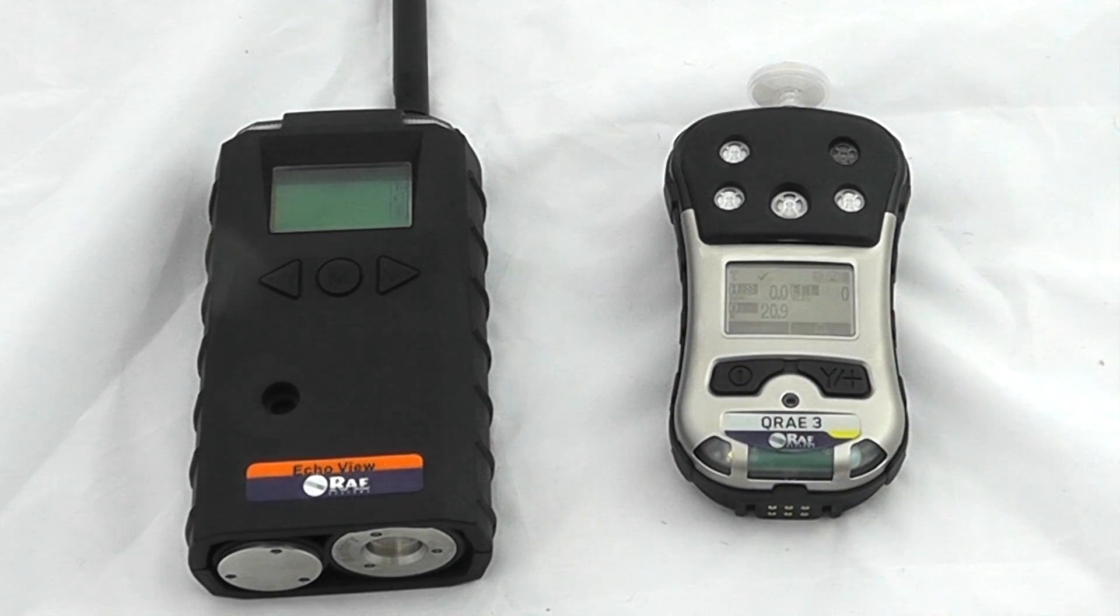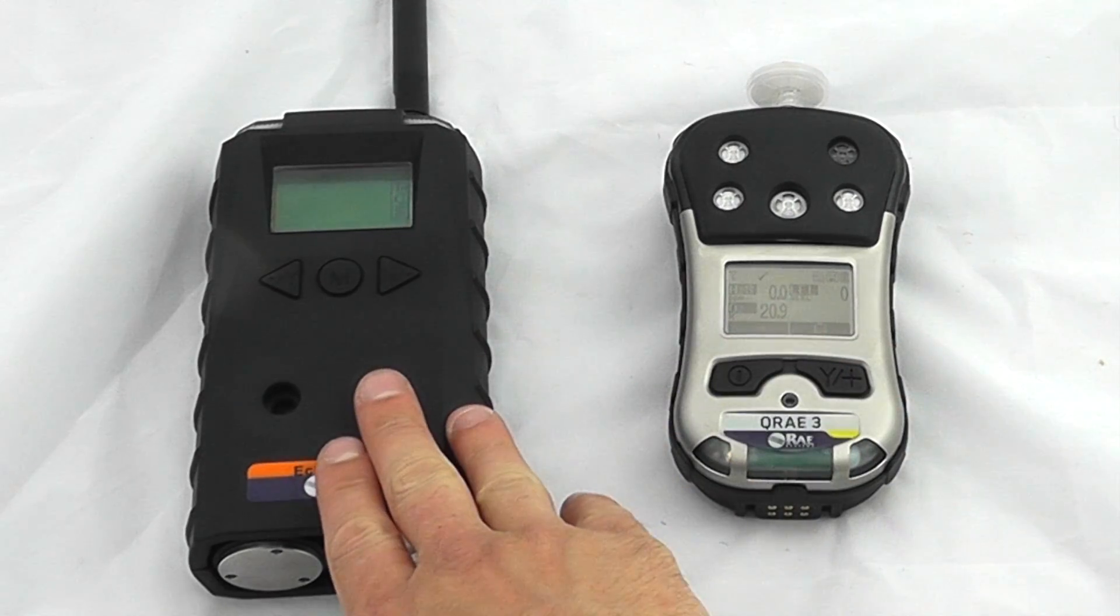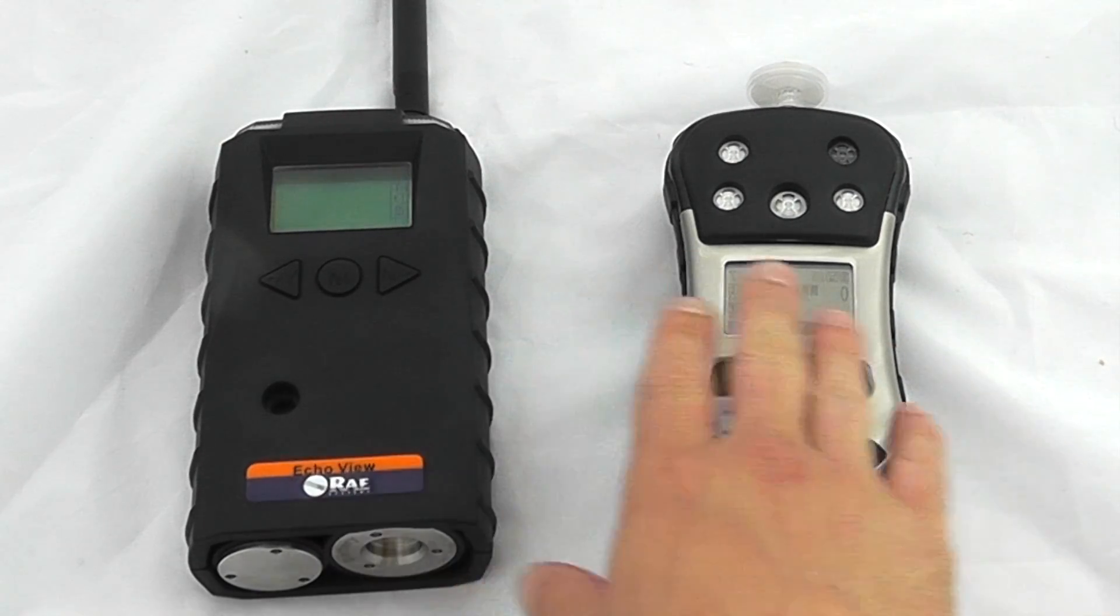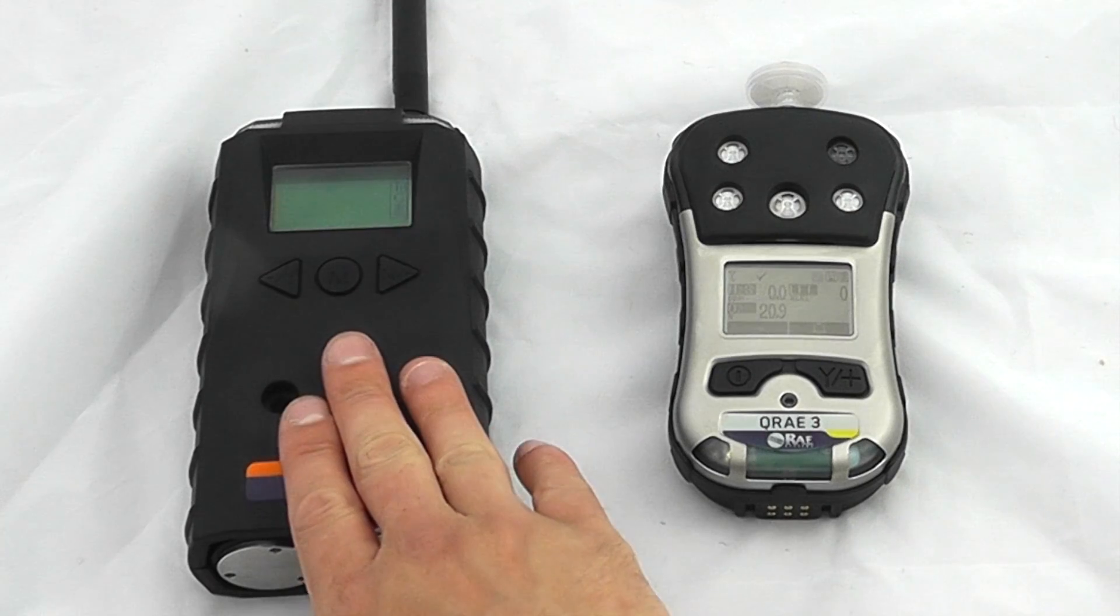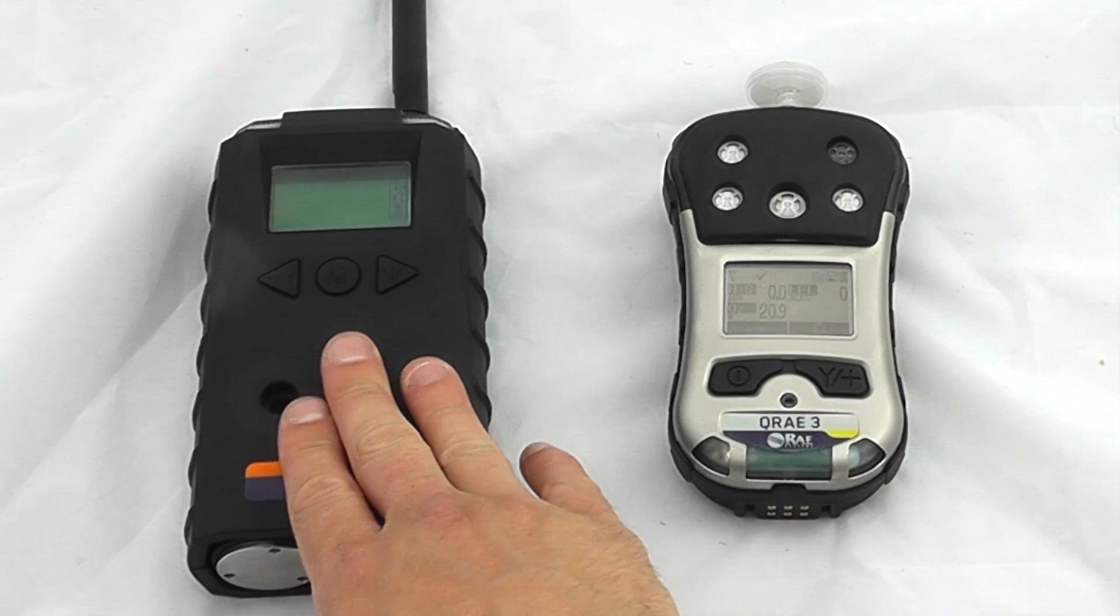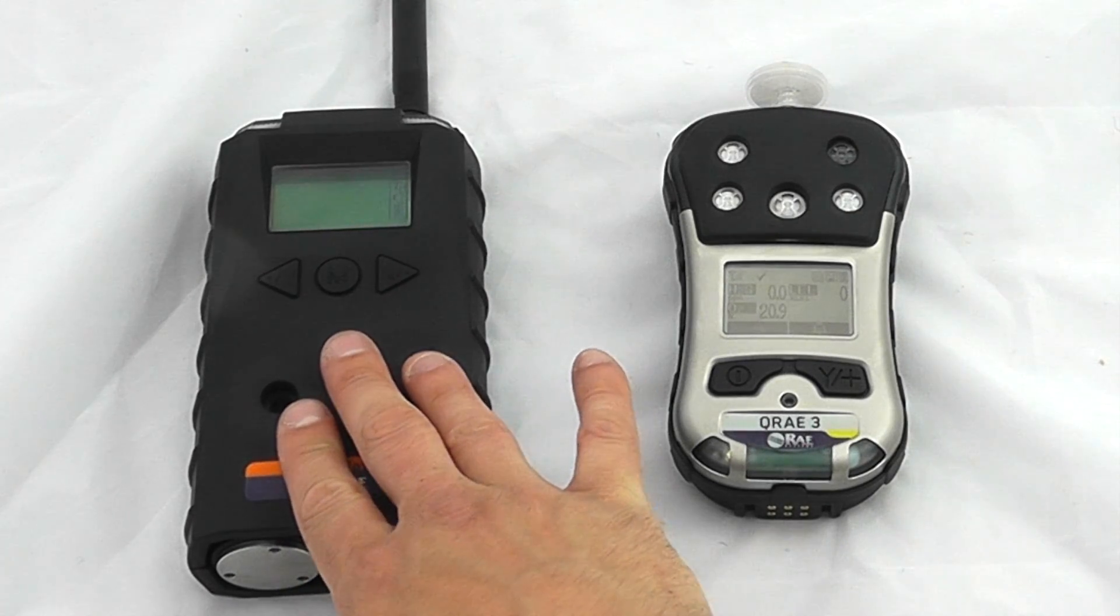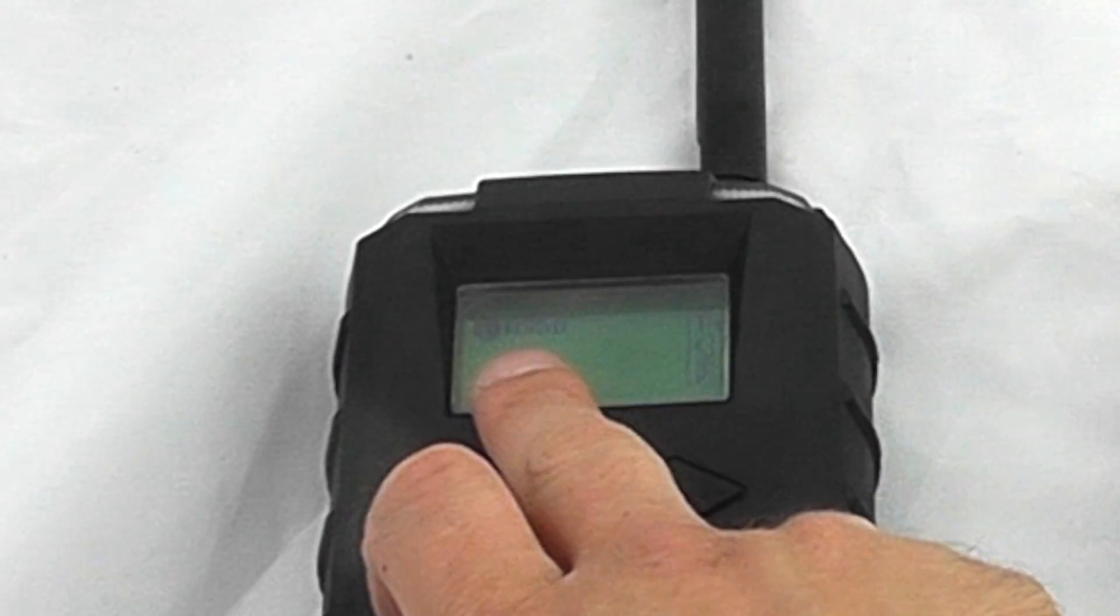The instrument must be in general measurement mode. This device is now searching and sending information. It can take a minute or two when initially starting. We can now see our instrument has been recognized by the Echo View via its individual serial number.